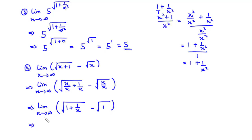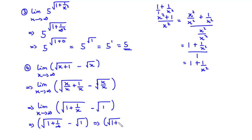Now we plug infinity into this limit: we have √(1 + 1/∞). Since 1/∞ = 0, this becomes √1 − √1 = 1 − 1 = 0. Therefore, the limit of this function as x approaches infinity is equal to 0.